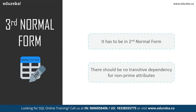The next topic is third normal form, which is used to reduce data duplication and ensure referential integrity. A table must meet two conditions to be in third normal form: it must be in second normal form, and no non-prime attribute should be transitively dependent on another non-prime attribute. In simple terms, if C depends on B and B depends on A, then transitively C depends on A — this should not happen. All non-prime attributes must depend only on the prime attributes.